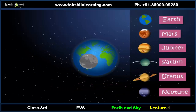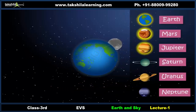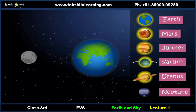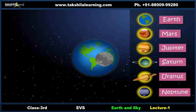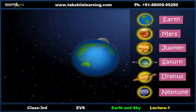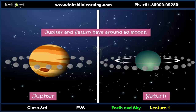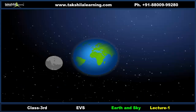Apart from Earth, Mars, Jupiter, Saturn, Uranus, and Neptune are other planets that have moons. While Earth has only one moon, all other planets have more than one. Jupiter and Saturn have around 60 moons each.